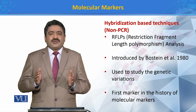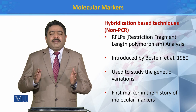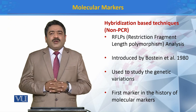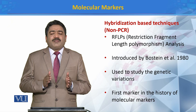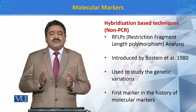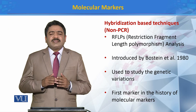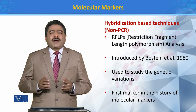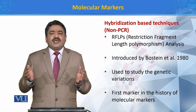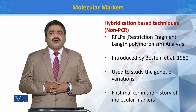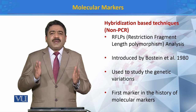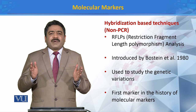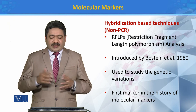Different individuals کے اندر genetic variability ہوتی ہے۔ ایسے تمام organisms جو closely related ہوتے ہیں، ان کے اندر genetic variability بھی کم ہوتی ہے، اور ایسے organisms جو distantly related ہوتے ہیں، ان کے اندر genetic variation زیادہ ہوتی ہے۔ اگر ہمارے پاس مختلف animals کے samples ہیں تو ہم ان کے RFLPs کو compare کر کے اندازہ لگا سکتے ہیں کہ یہ unknown samples closely related ہیں یا distantly related ہیں۔